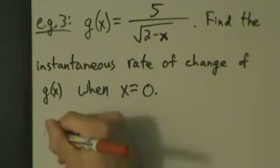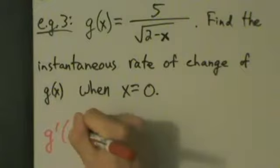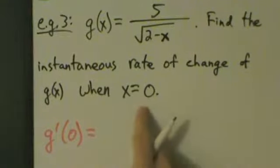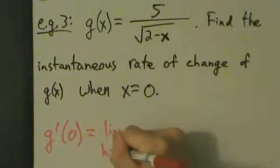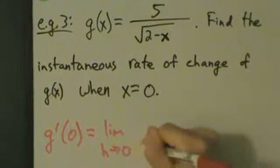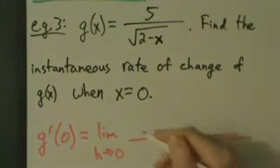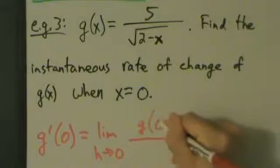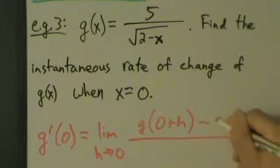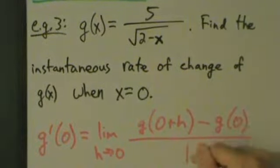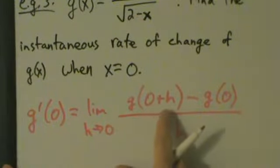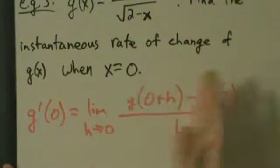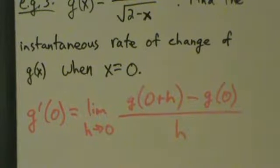So let's go ahead and go to our definition of the derivative. It's g prime of 0, because we want it at x equals 0. So g prime of 0 equals the limit as h goes to 0 of g of 0 plus h minus g of 0, all divided by h. Really, g of 0 plus h is just g of h, but I want to put the 0 plus h in there just to emphasize the general form of the definition.